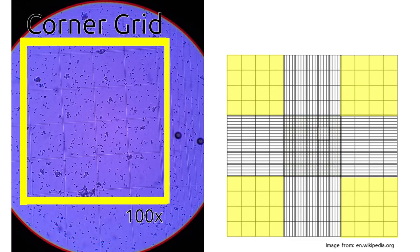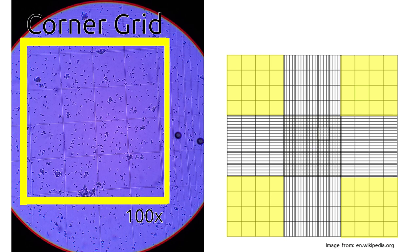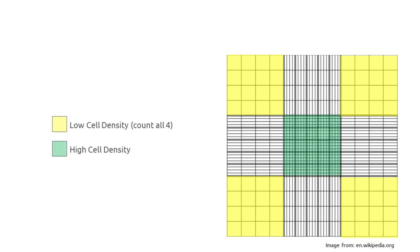The second region is actually four parts of the coverslip. It's the four corners. Each of these corners is one millimeter by one millimeter in size and has a lower density grid, typically 0.25 by 0.25 millimeters. So this is perfect for counting lower density solutions, but because you're counting a smaller number of cells you should count all four corners in order to ensure an accurate count.